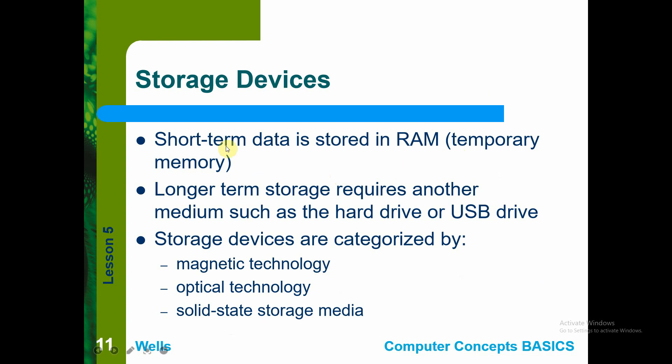For storage devices, as mentioned in the previous topic, we have RAM as temporary memory for short-term data. If you need longer-term usage, we have storage such as hard drives or USB drives. Storage devices are categorized by three technologies: magnetic, optical, and solid-state storage media. Most recent versions of storage devices are using SSD, or solid-state storage media technology.